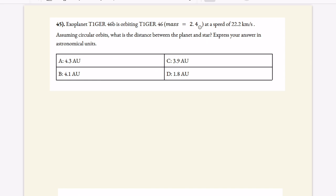So we have TIGER 46b, an exoplanet orbiting a star TIGER 46 of 2.4 solar masses at a given speed in kilometers per second. Assuming circular orbits, we need to find the distance between the planet and star and express our answer in AU. So to go right into this, we're going to first draw a little picture. Here is our circular star, and then we're going to have some distance r to an exoplanet, let's say 46b.